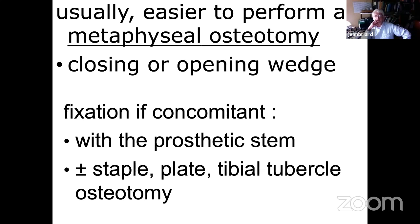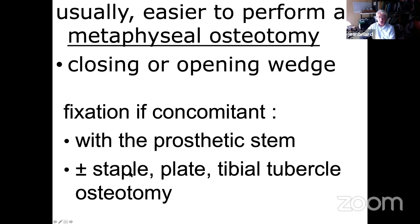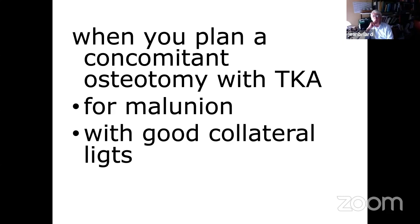Usually it is easier to perform a metaphyseal osteotomy — most cases shown here use metaphyseal osteotomy, either closing or opening wedge. Planning is essential — you must consider fixation. Can you use a prosthetic stem? Sometimes difficult with a large femoral curve. Staple and plate options exist. Tibial tubercle osteotomy is used very often. When planning a concomitant osteotomy with good collateral ligaments from the malunion, that means you keep the joint strong.